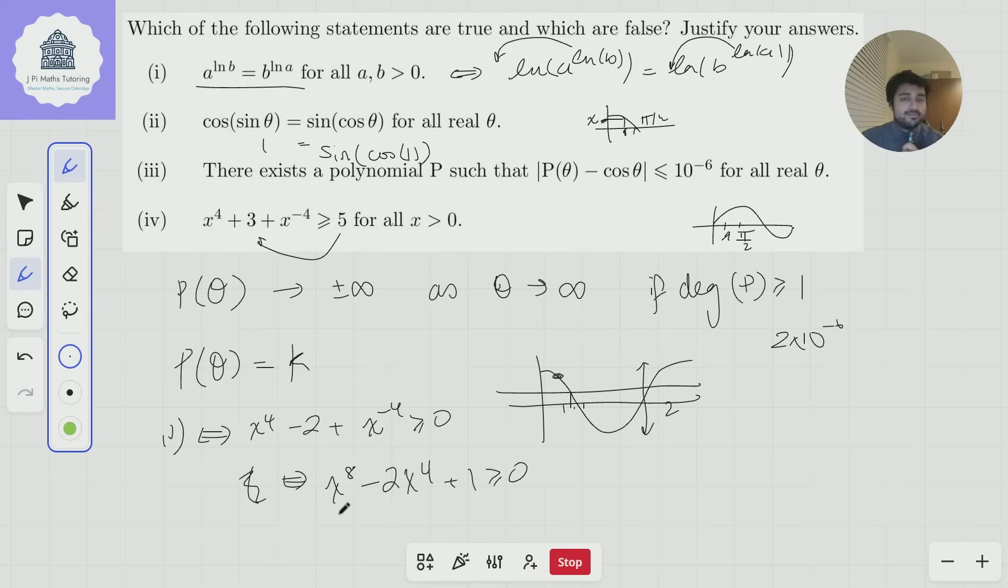This is true if and only if (x^4 - 1)^2 ≥ 0. And since that is a real number and I'm squaring it, it certainly will be at least 0.